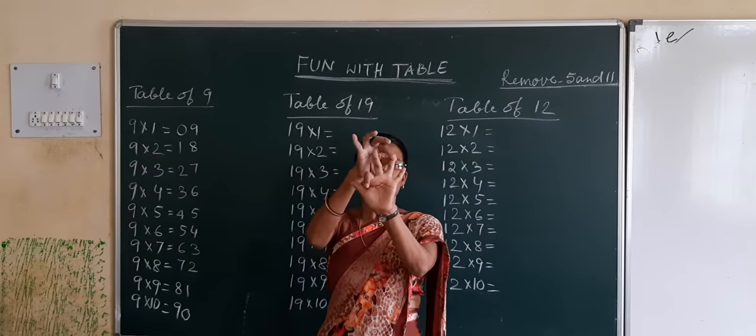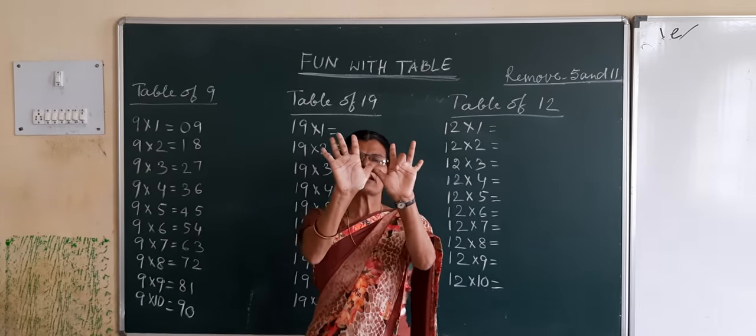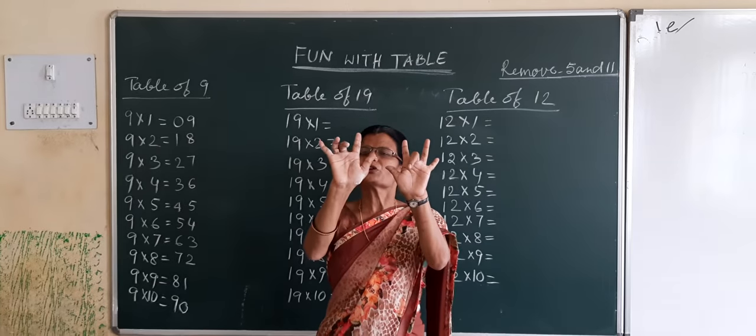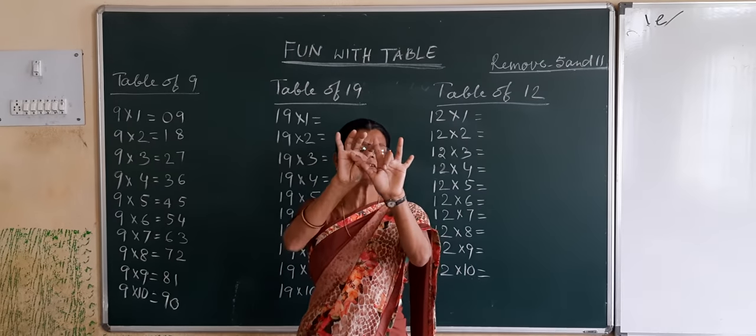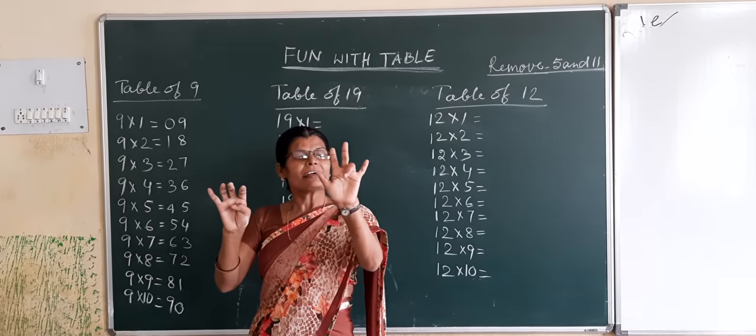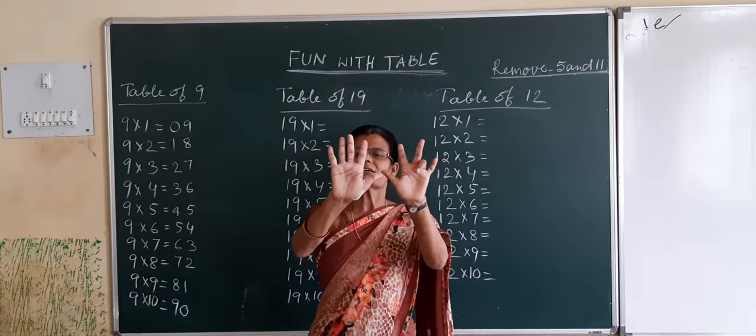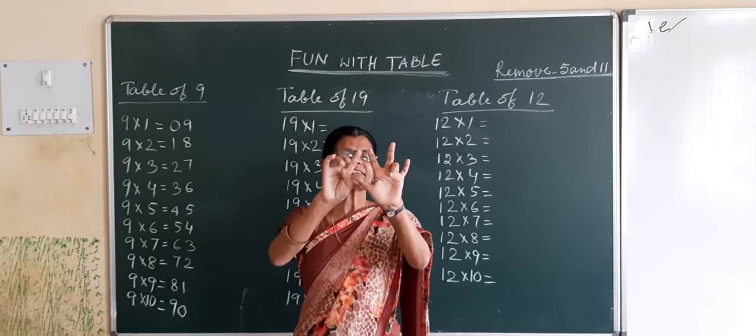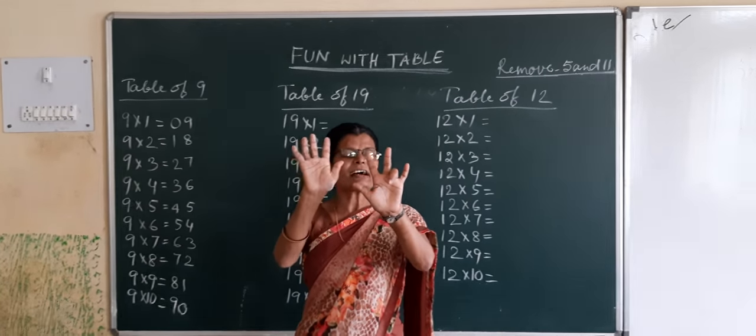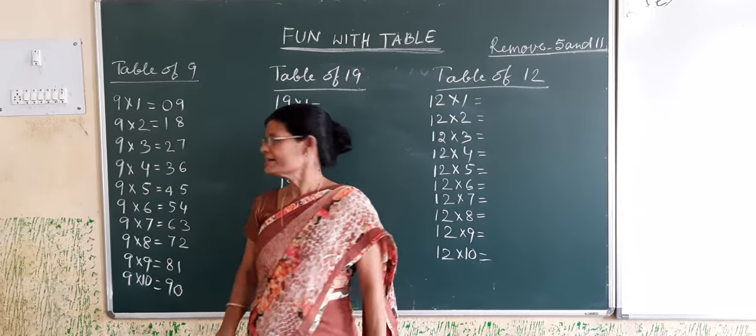9 sixes are 54. 9 sevens are 63. 9 eights are 72. 9 nines are 81. 9 tens are 90.